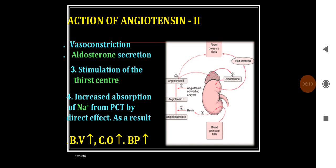Angiotensin 2 has various effects. Importantly, it causes peripheral vasoconstriction and thus increases blood pressure. It also stimulates the production of aldosterone from the adrenal cortex. Aldosterone is a potent mineralocorticoid that conserves sodium and water. Stimulation of the thirst center leads to increased water intake, expanding ECF volume. Angiotensin 2 also has a direct effect on the proximal convoluted tubules, increasing sodium absorption, so blood volume and hence blood pressure increases.